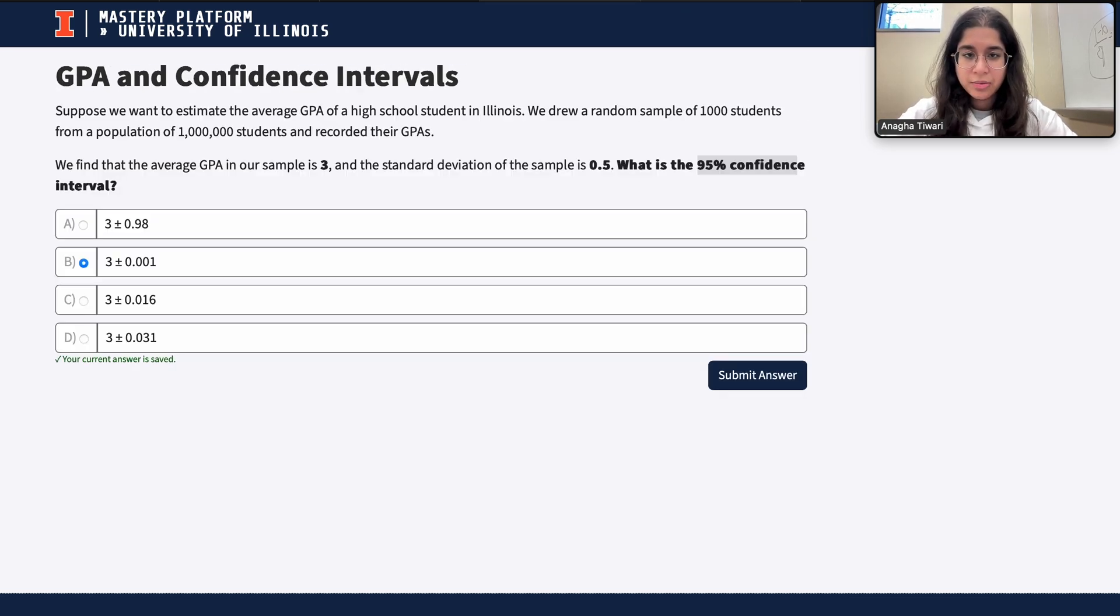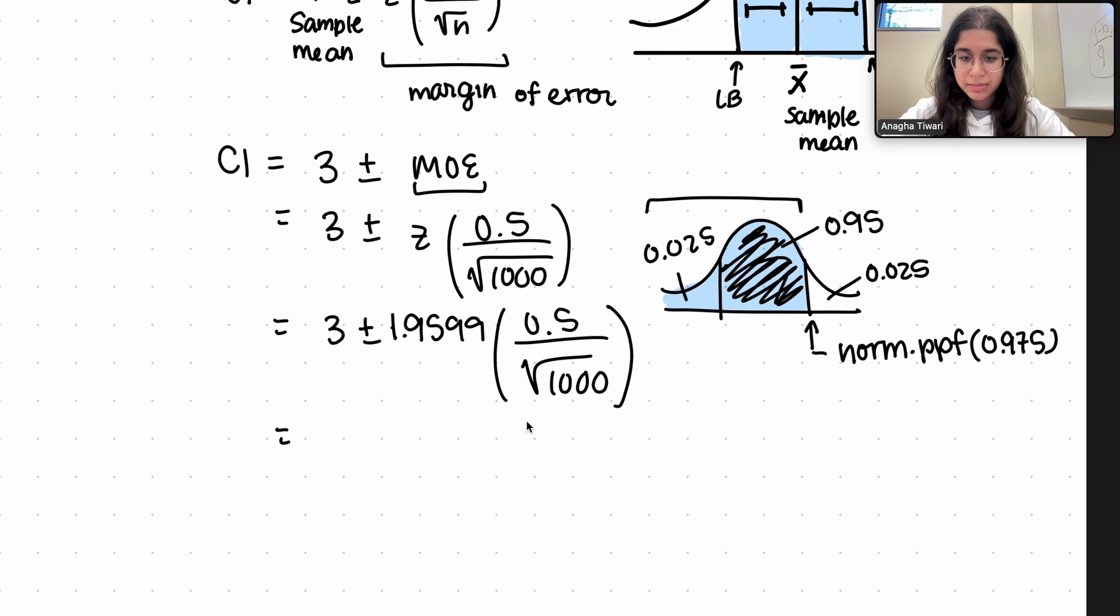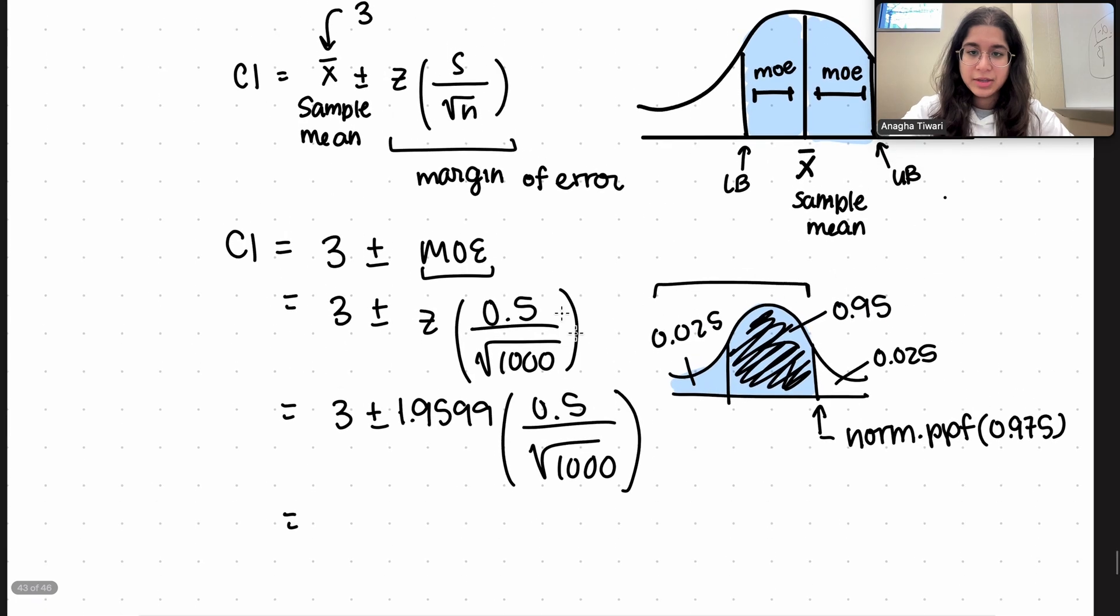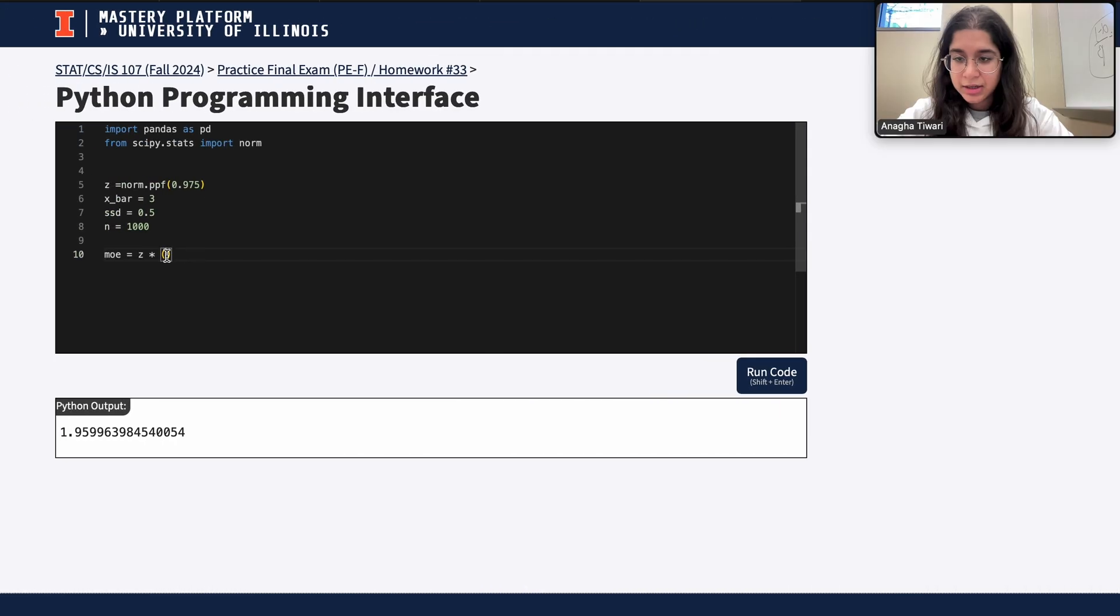So finally our margin of error is going to be z times, I'm just looking at this formula here, so it's going to be z times our 0.5 which is our sample standard deviation, so z times ssd divided by square root of n. Basically this formula here, so z times ssd divided by square root of n to the power of half.